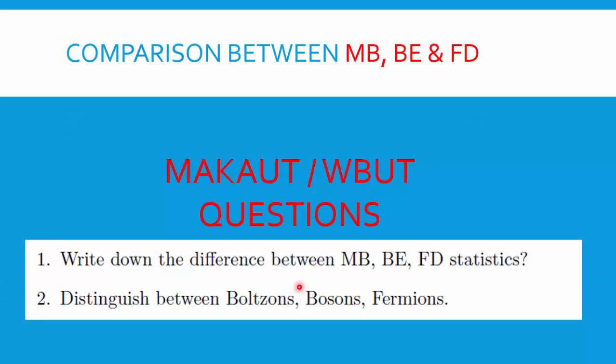Regarding university exam questions: the question 'What is the difference between Maxwell-Boltzmann, Bose-Einstein, and FD statistics?' is answered using five points: (1) distinguishable vs. indistinguishable particles, (2) Pauli's exclusion principle, (3) spin, (4) distribution function, and (5) thermodynamic probability. If the question asks to distinguish between bosons and fermions, the answer is essentially the same comparison between MB, BE, and FD.